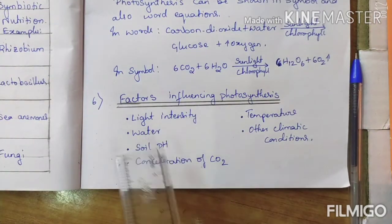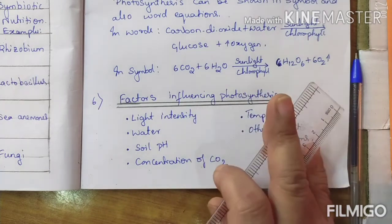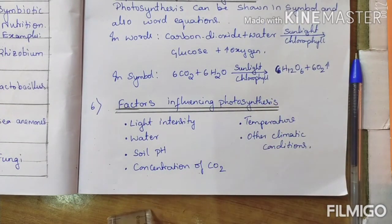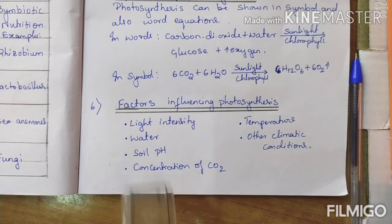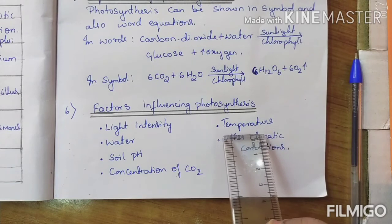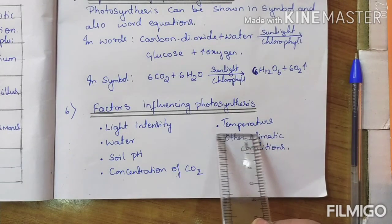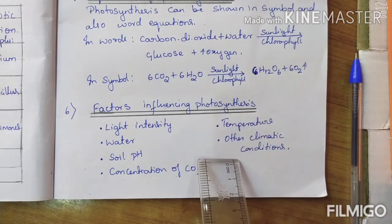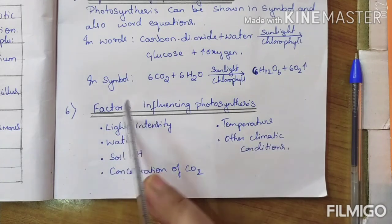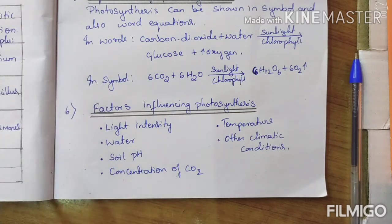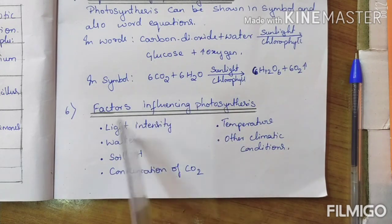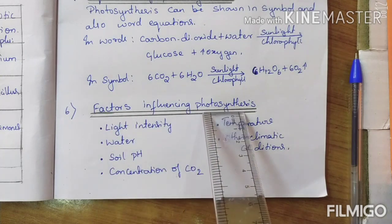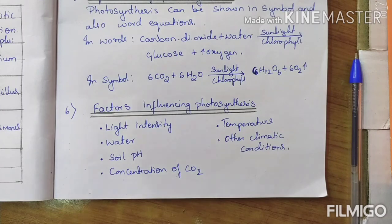Other factors include the concentration of CO₂ — if a sufficient amount of carbon dioxide is not available, the plant will be suffocating for breathing, just as we suffocate when there is less oxygen. Temperature is another factor — when the temperature in the environment varies, the process of photosynthesis gets affected. Other climatic conditions during rainy season, winter season, or summer season, and any disasters — when all these factors vary, the photosynthesis process will also vary in its work.